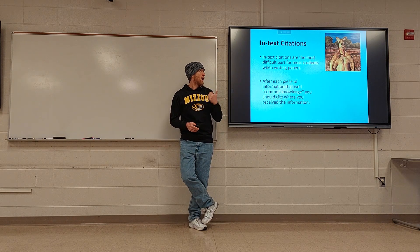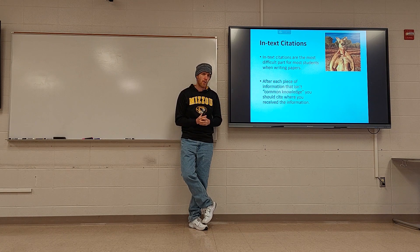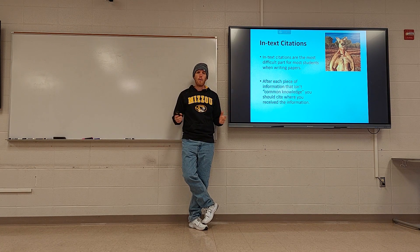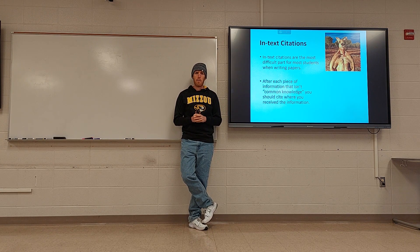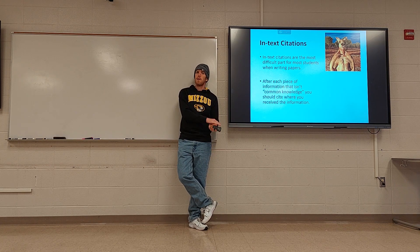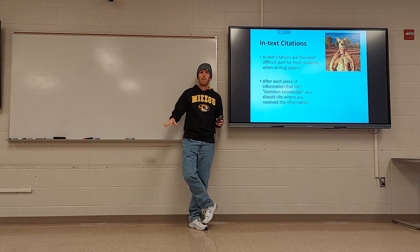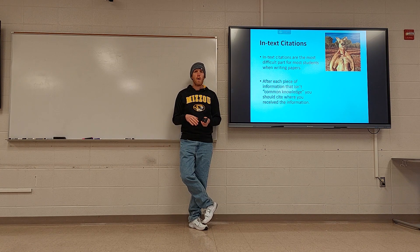In terms of what common knowledge is, it's sometimes a gray area. For example, that is Roger the kangaroo, made famous for having huge muscles. He's a red kangaroo, one of multiple species in Australia. Common knowledge: Australia is home to kangaroos — that doesn't have to be cited. However, if you write that red kangaroos are found in the desert interior of Australia while gray kangaroos are found along the eastern coast, most people don't know that, so you would need to cite your source.